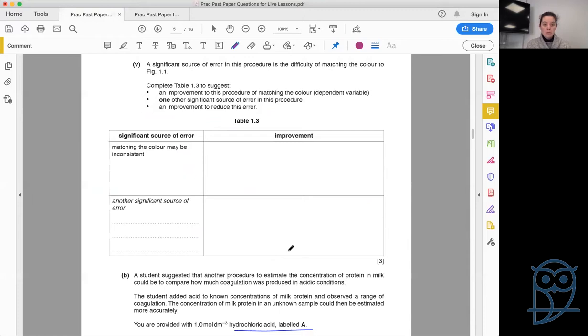They then ask us to complete table 1.3 to suggest an improvement to this procedure of matching the color—the dependent variable, the one we're measuring—one other significant source of error in this procedure, and then an improvement to reduce this error. Whenever you're looking for errors, it's things that's going to affect the experiment from within the experiment. It's not things that you may or may not do correctly. It's fundamental flaws with the way the experiment's designed. When it comes to color and matching colors and reading colors, these improvements are not limited by budget, so we can go straight to that expensive, fun one. The improvement would be to use a colorimeter.